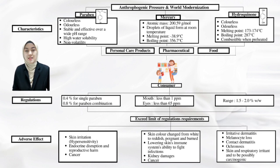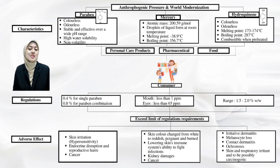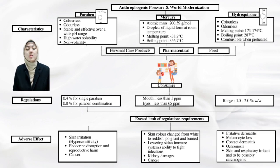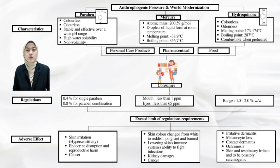Hydroquinone is also colourless and odorless, and is an extremely hazardous chemical that has been identified as a clastogen and mutagen. A clastogen is a poison that may produce a break in chromosomes, damaging their portions and causing chromosomal rearrangement. The effective concentration of hydroquinone ranges from 1.5 to 2.0% weight per weight.